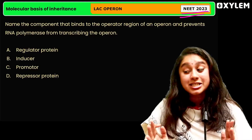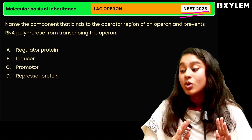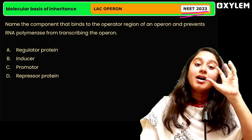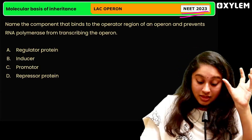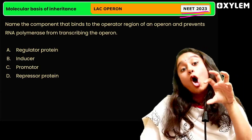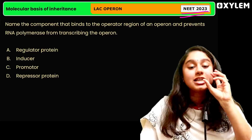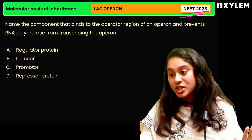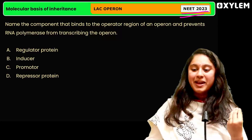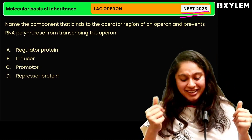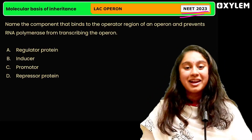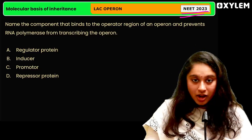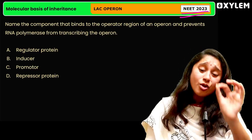So in the structural genes, what is stopping transcription? The particular component that binds to the operator and stops transcription — this is the key question. You have the option in front of you — I know you can answer this. Definitely comment your answer below, and I will check all of you.